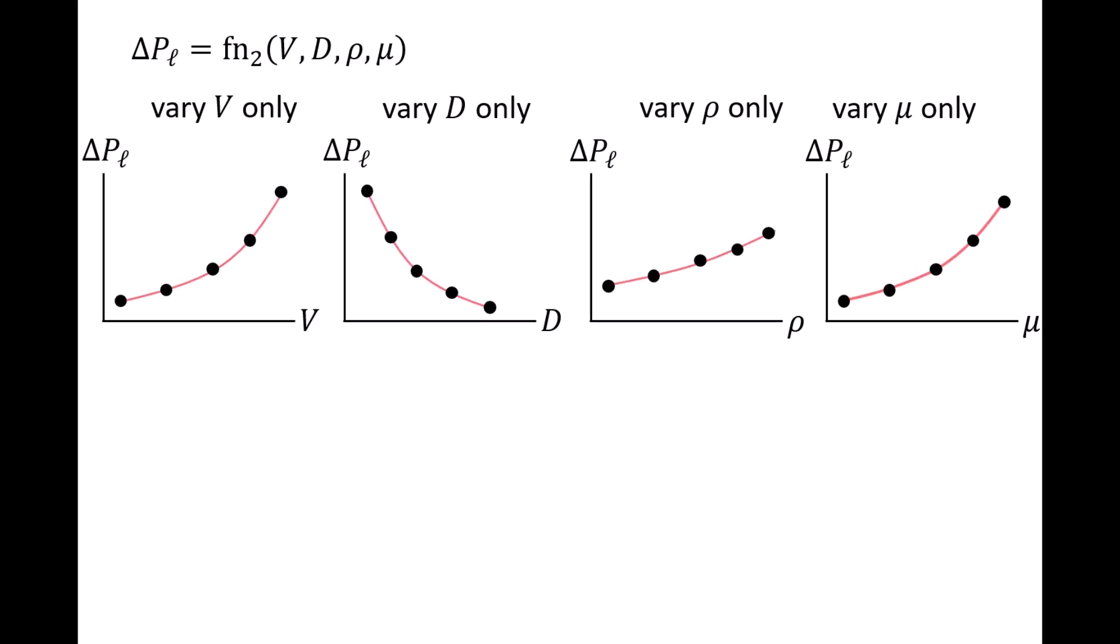After obtaining this experimental data, we could fit a curve to each set of data to get an expression for how delta p l varies with each variable.